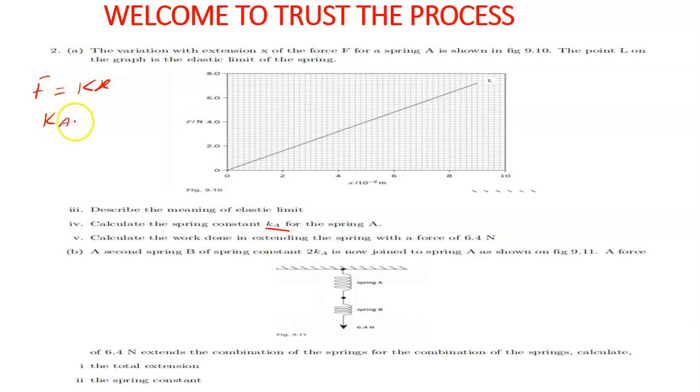Finding K, so in this case, we're going to be finding Ka. Ka should be equal to F over x. Now, F is in the y-axis. As we can see, it is F per Newton. Not that we're dividing F by N, but this means the force is measured in Newtons. And then, x per 10 to the negative 2 meters. We know that 10 to the negative 2 is nothing but cent. So this is the same as x per centimeter, meaning the extension is in centimeters.